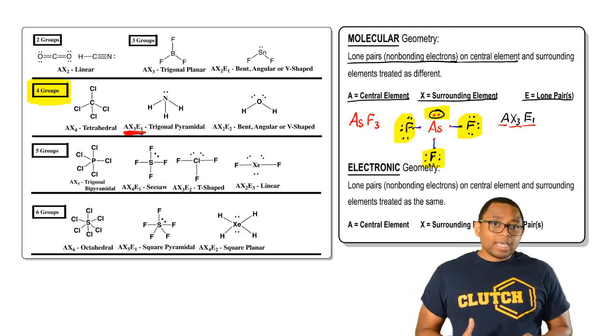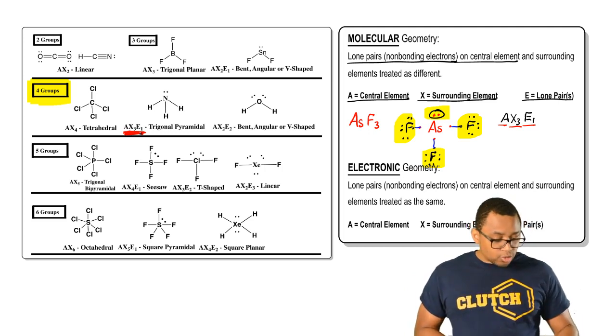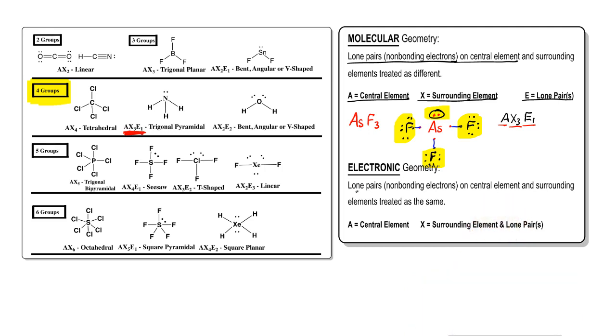What's the difference between molecular geometry and electronic geometry? For electronic geometry, we're going to say that the lone pairs on the central element and the surrounding elements are treated as the same. The key here would be A represents our central element again, and then X is the surrounding element or elements and the lone pairs on that central element.